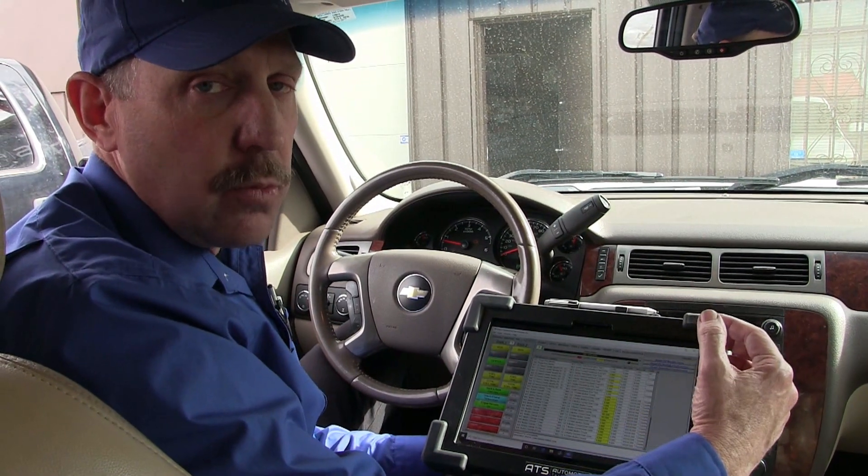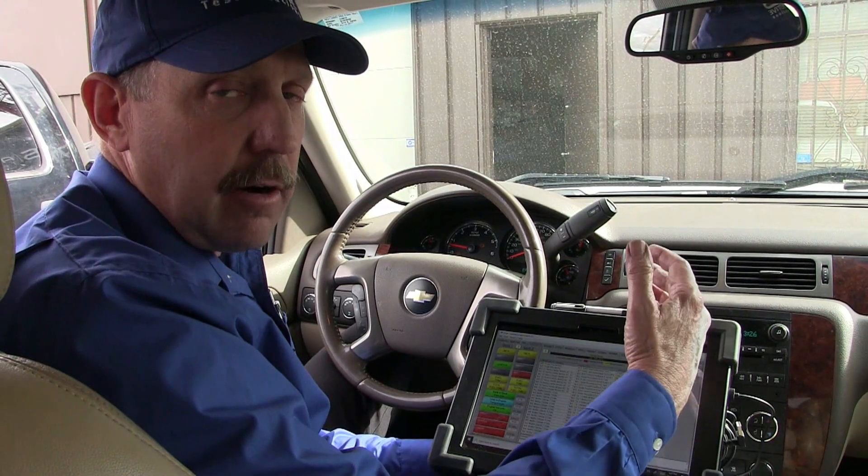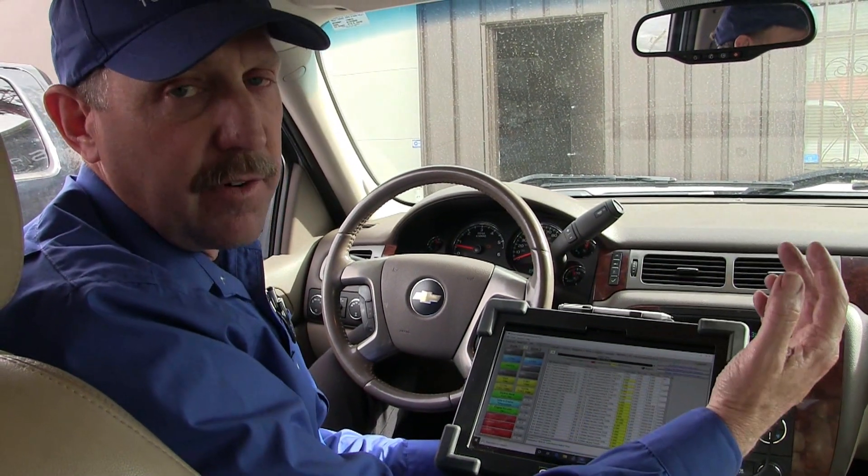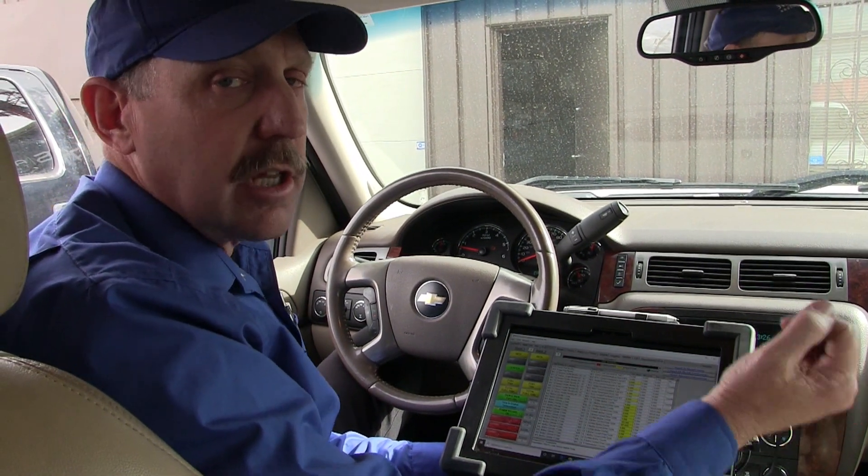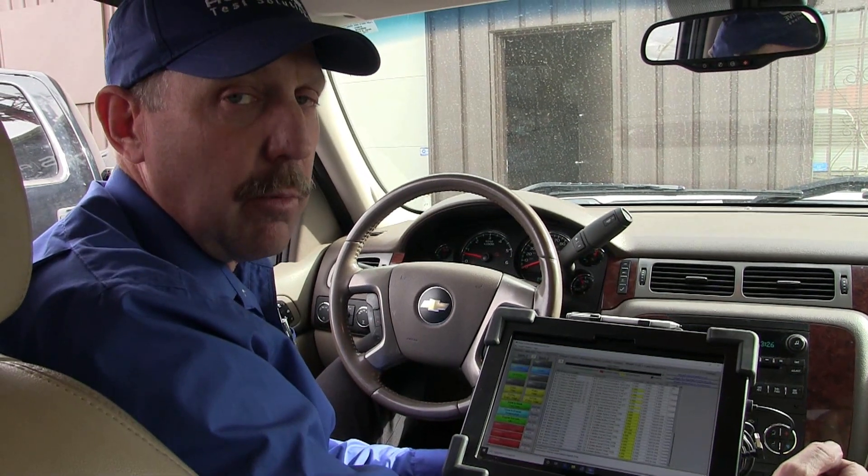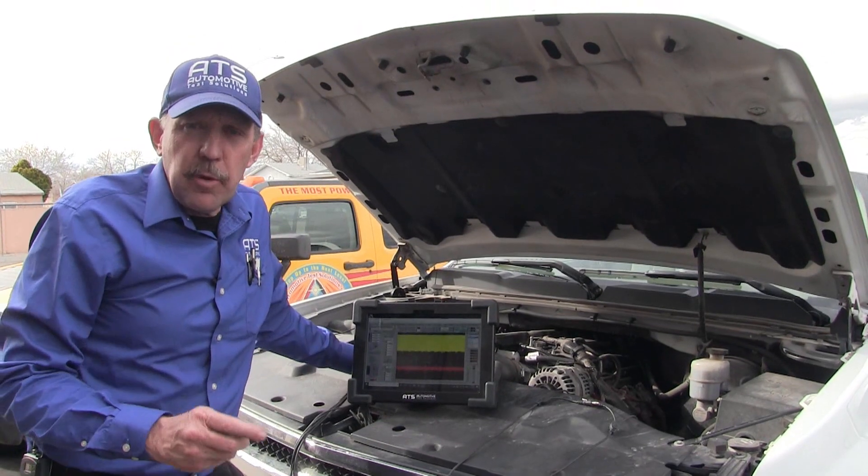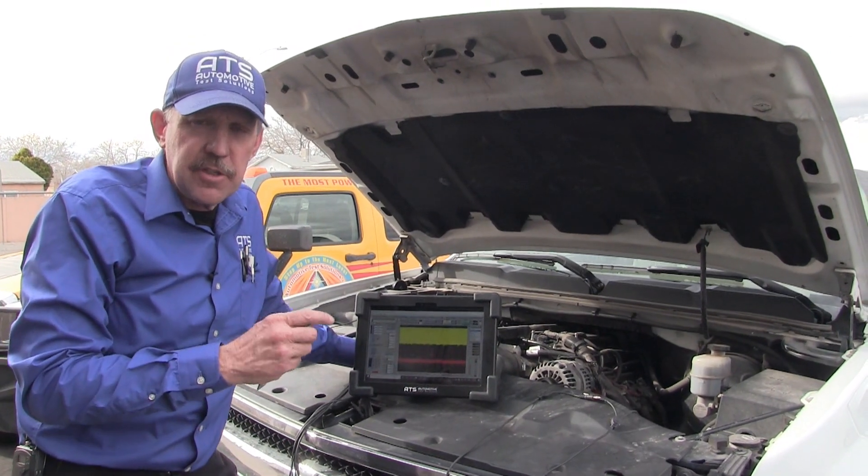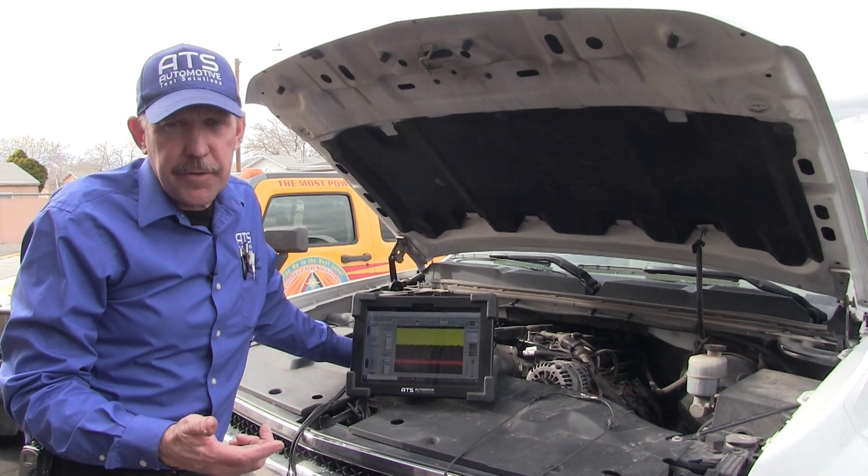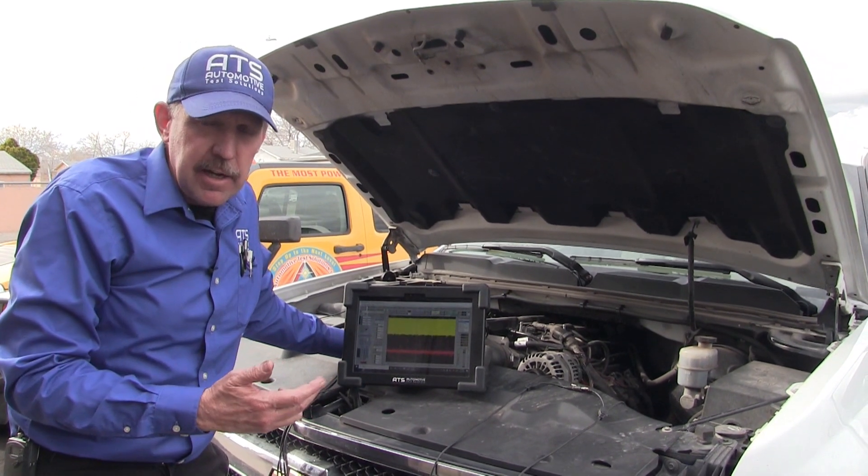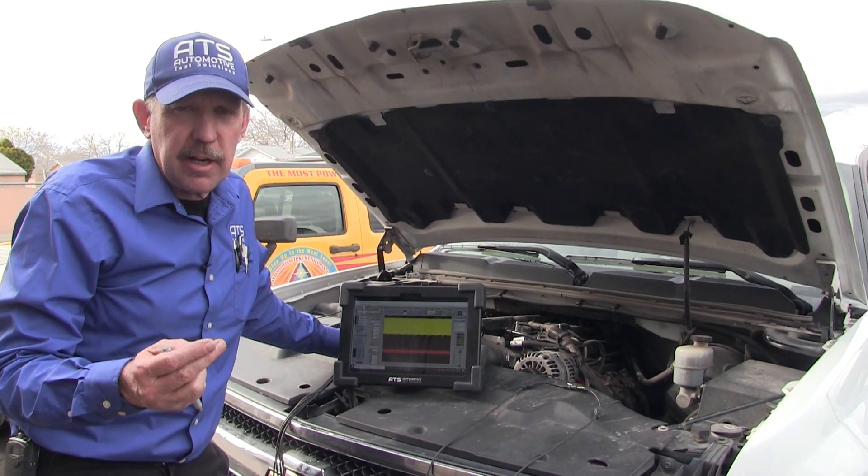So what we want to do is run a misfire off the CKP and confirm that this is our cylinder. Let's go ahead and pop the hood and take a look. Now that we've popped the hood on this Chevy Silverado, it's got a 5.3. It's not missing right now, but when it does miss, we want to confirm the cylinder.